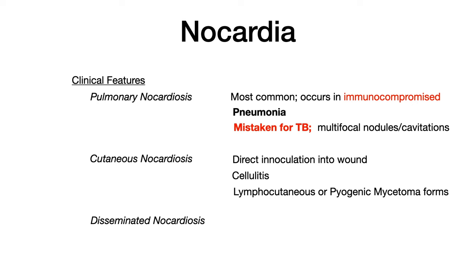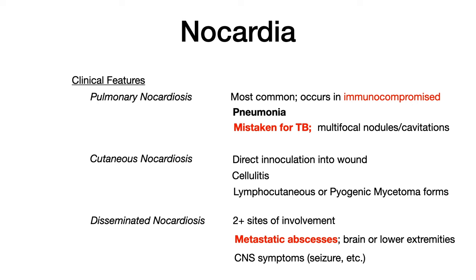The final and most severe type is disseminated nocardiosis. Usually the infection starts as pulmonary or cutaneous nocardiosis and then disseminates — becoming 'metastatic,' meaning two or more sites of involvement. The pulmonary infection produces a TB-like, pneumonia-like picture, but then the abscesses spread to other parts of the body, typically the brain — which is why it's sometimes called CNS nocardiosis. These are referred to as metastatic abscesses. On your exam, if you see brain or lower extremity abscesses combined with pulmonary nocardiosis symptoms, that's a slam dunk for nocardia infection.